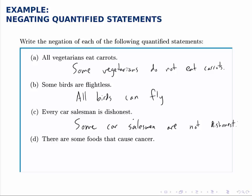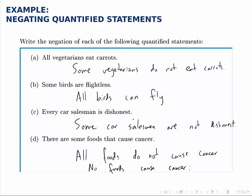Or instead of 'not dishonest,' you could write 'honest,' and again there are different English variations on the same logical statement. For part D, we have the word 'some' that we're going to negate, so we're going to have a universal quantifier, and then we'll negate the part about causing cancer. Maybe a more natural way to say this would be 'no foods cause cancer,' and you should be able to tell that those two statements are equivalent. 'All foods do not' and 'no foods do' are the same things.